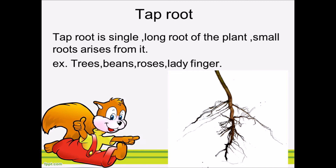Tap root is a single long root of the plant, and small roots arise from it. We can see tap root in different types of trees, beans, roses, bloody fingers, etc.